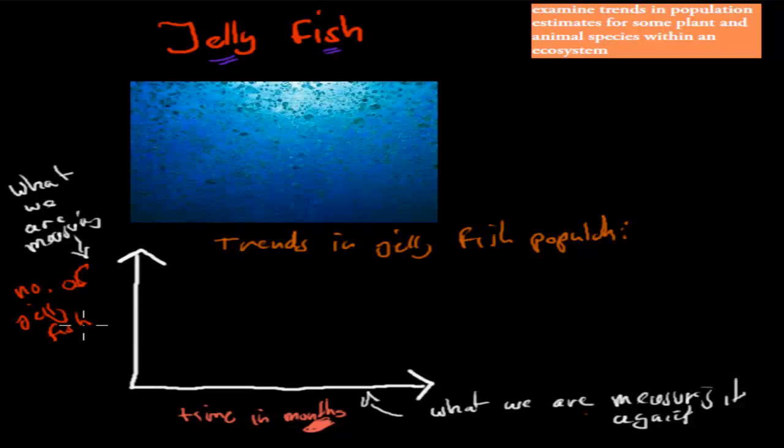So for example, if we're having this, then number of jellyfish, which we're measuring, it goes on the vertical. And the number of months, which is what we're measuring against, goes on the horizontal.